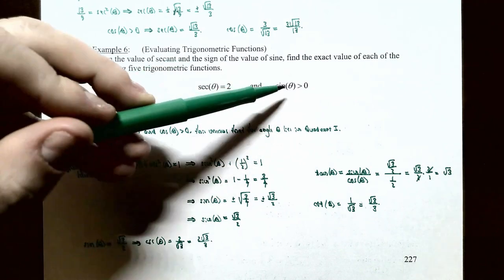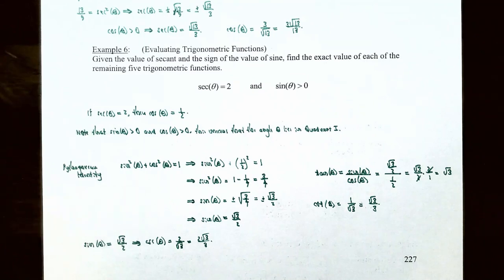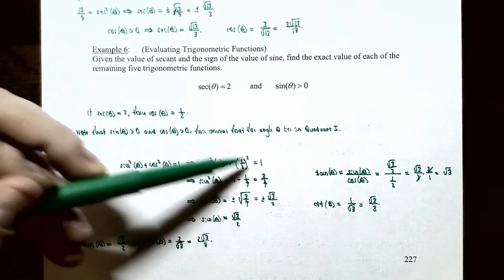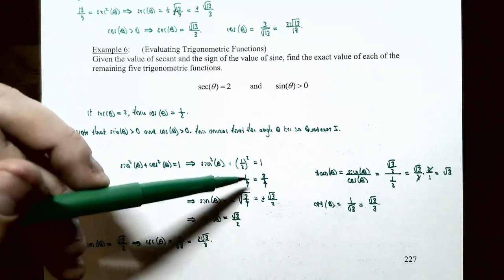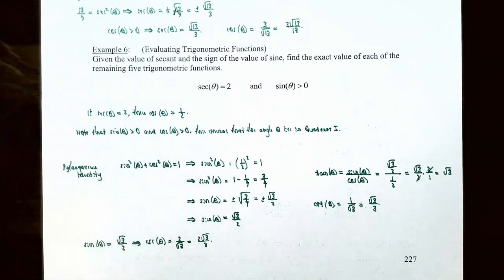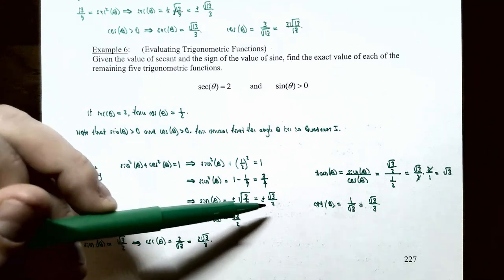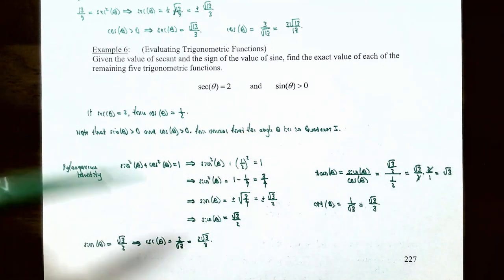Since sine of theta is positive and cosine of theta equals one-half, which is also positive, the angle must be in quadrant one, where both sine and cosine are positive. Using the Pythagorean identity sine squared of theta plus cosine squared of theta equals 1, replacing cosine of theta with one-half gives sine squared of theta plus one-fourth equals 1. Subtracting one-fourth from both sides gives sine squared of theta equals three-fourths. Taking the square root gives sine of theta equals plus or minus square root of three-fourths, which equals plus or minus square root 3 divided by 2. Since sine of theta is positive, sine of theta equals positive square root 3 divided by 2.